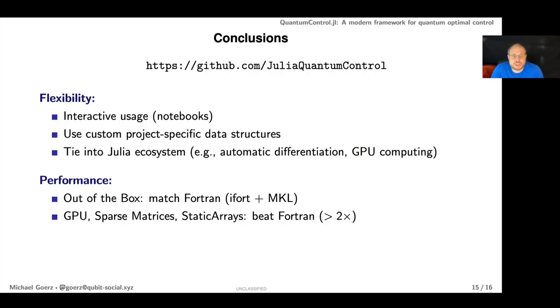Let me conclude. What we get with this Julia framework in terms of flexibility is interactive usage—you can do all your work in Jupyter notebooks, and incidentally Jupyter is Julia, Python, and R, so Julia is really quite well supported. You can use custom project-specific data structures and that's really the key to both the flexibility and performance. You can define your own data structures without having to modify the library. This allows us to tie into the whole Julia ecosystem so you can use all the packages for automatic differentiation, GPU computing, and so forth.